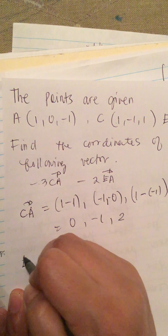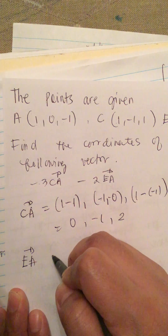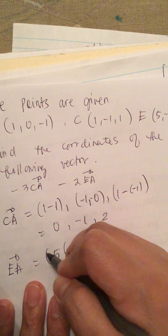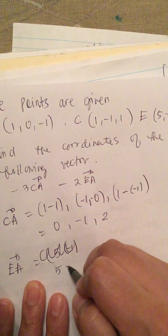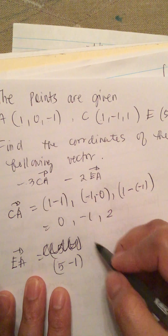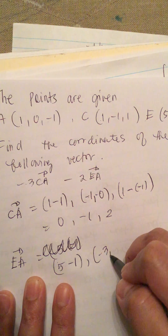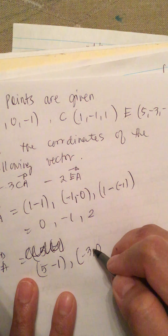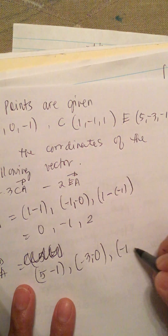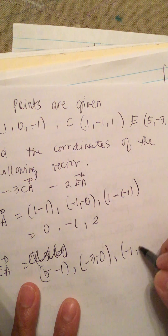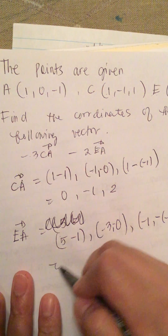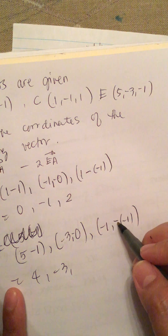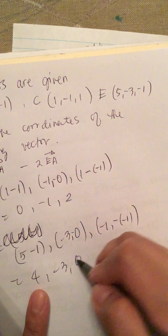Now, vector EA is equal to (5 minus 1, minus 3 minus 0, minus 1 minus negative 1). So we combine this: we get 4, we get minus 3, and minus 1 plus 1 is 0. So vector EA equals (4, -3, 0).